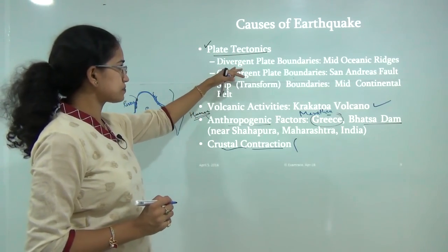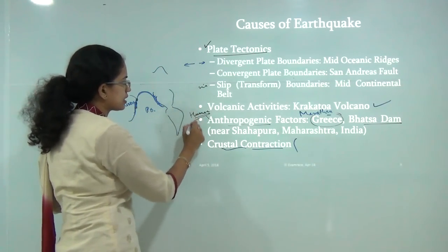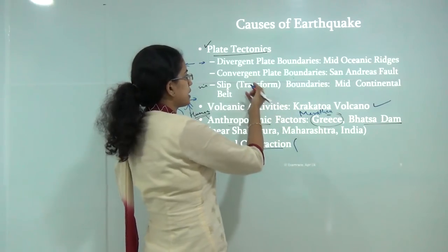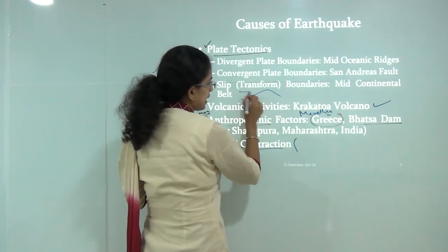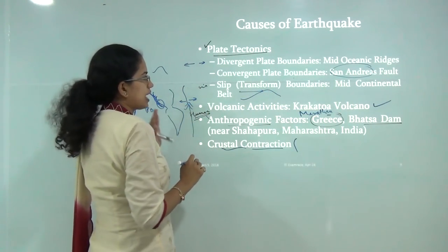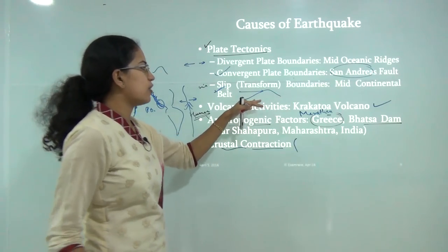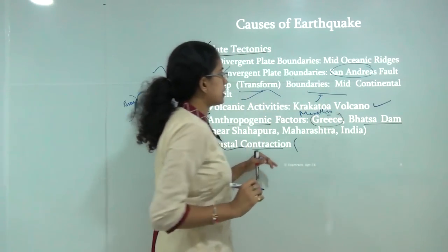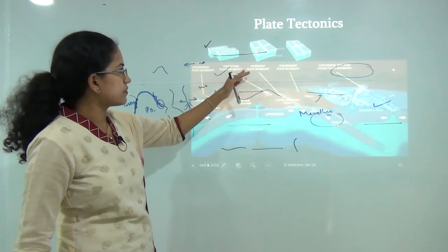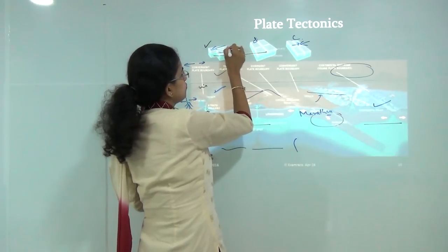Plate tectonics is one of the major reasons for earthquakes. Divergent plate boundaries are regions where plates move away from each other — for example, the Mid-Atlantic Ridge. Convergent plate boundaries, where one plate collides with another, such as the San Andreas Fault or the western coast of California, are also prone to earthquakes. Transform boundaries, where plates slip past one another, include the mid-continental belt and the Himalayan mountain range.